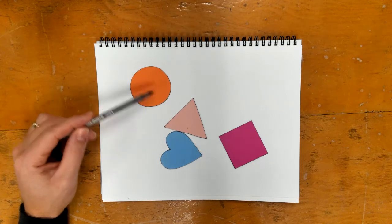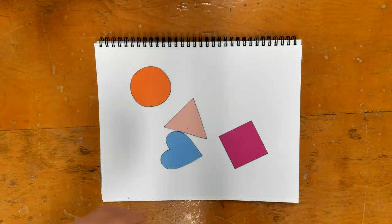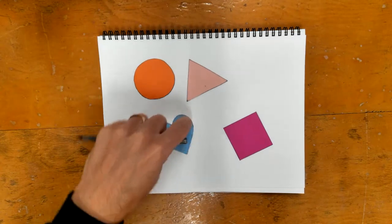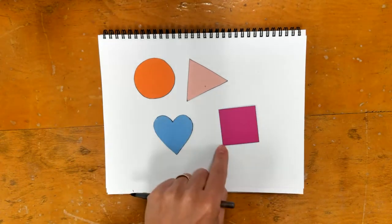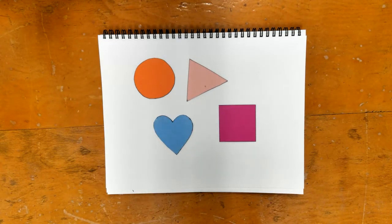We need the circle, the triangle, the heart, and the square. We're going to need those today.